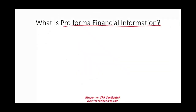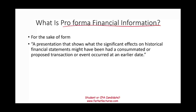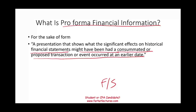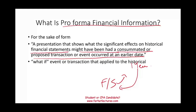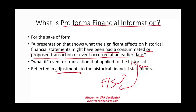Now, what is pro forma financial information? Pro forma is Latin for 'for the sake of form.' It is basically a presentation that shows what the significant effect on historical financial statements might have been, had a consummated or proposed transaction or event occurred at an earlier date. Simply put, we are looking at financial statements and asking: let's assume something happened one year earlier — what would have happened to the financial statement? We're doing a 'what if' on historical financial information, and we reflect this 'what if' in adjustments to the historical financial statements.